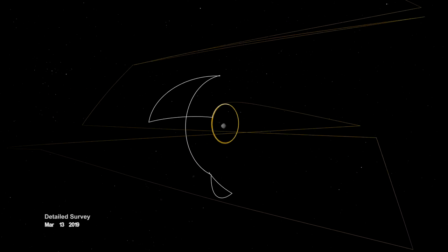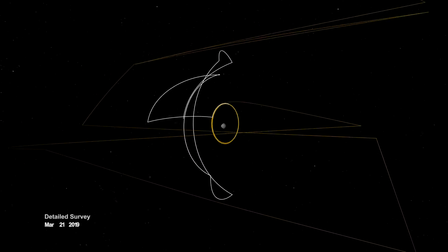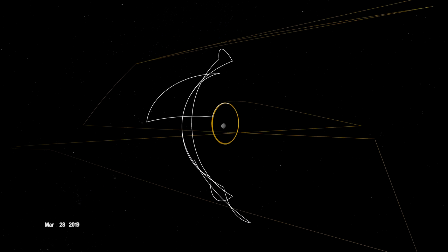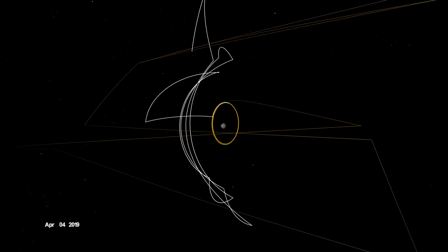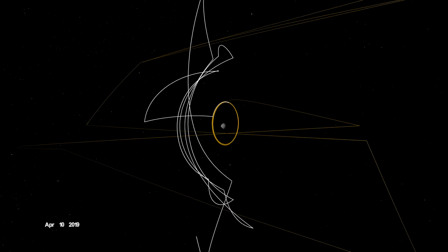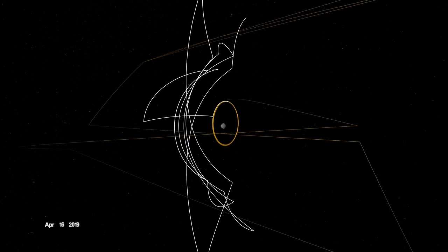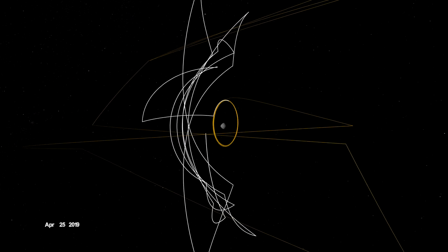In early 2019, it broke orbit to conduct a detailed survey. A series of sweeping passes allowed OSIRIS-REx to study geological features at different latitudes and times of day, enabling stereo imaging and landmark-based navigation.